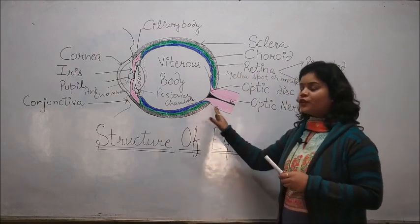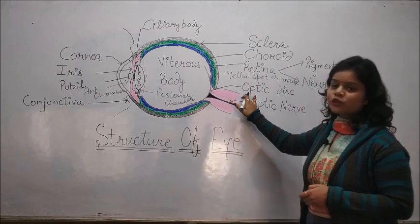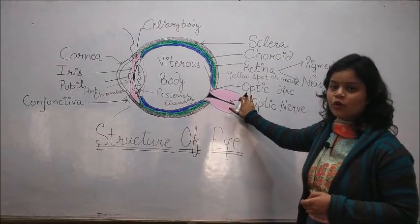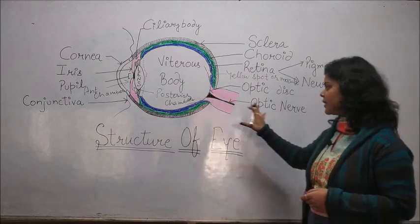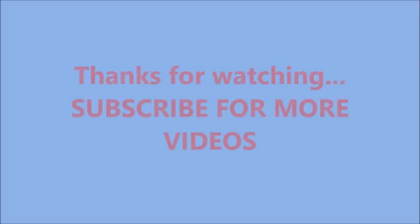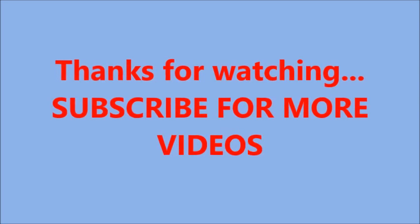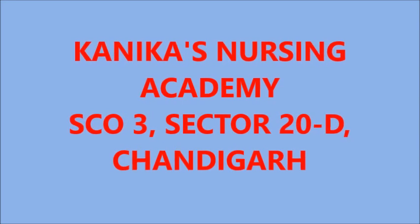At the end of the posterior of the eyeball, there is an optic disc. It is also known as the blind spot because it does not contain any rod or cone cells. In the optic disc there is the exit of the optic nerve which is responsible for the vision. Thank you.